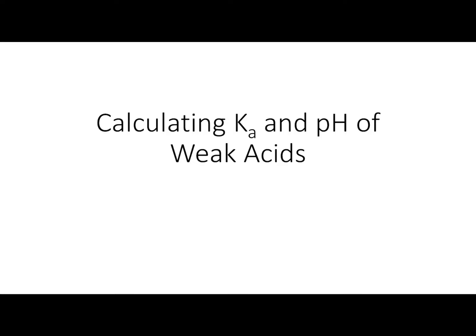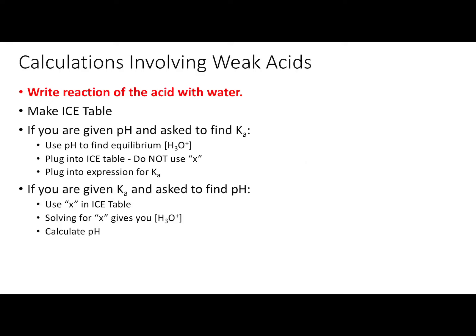The purpose of today's video is to talk about calculating the Ka and pH of weak acids. When we talk about calculations involving weak acids, there are a series of steps we're going to follow. The first step, common to any type of problem, is to write the reaction of the acid with water and make sure that reaction is balanced. The second step is to make an ICE table for that reaction, which includes constructing the correct Ka expression for the balanced equation.